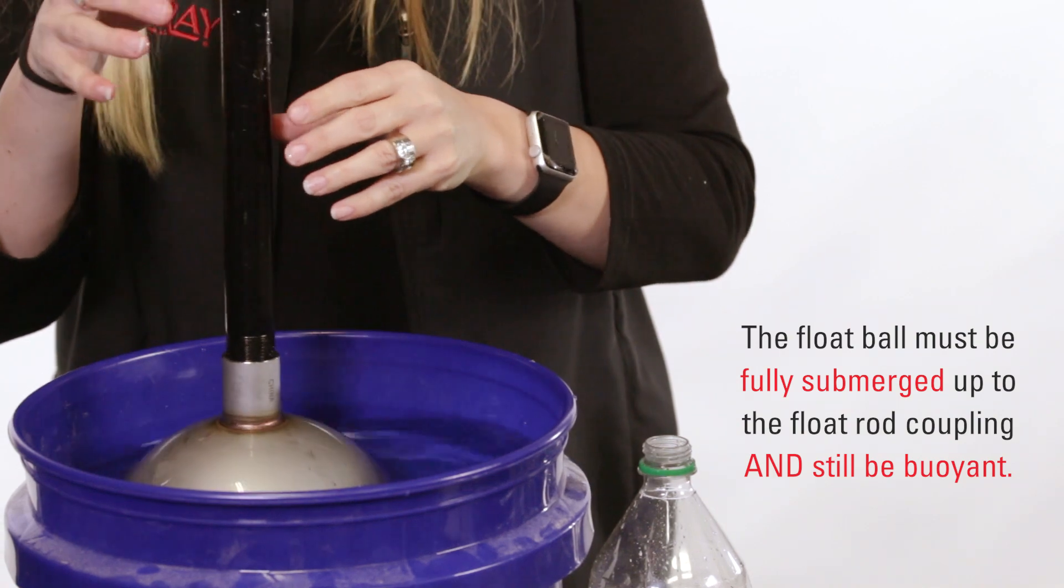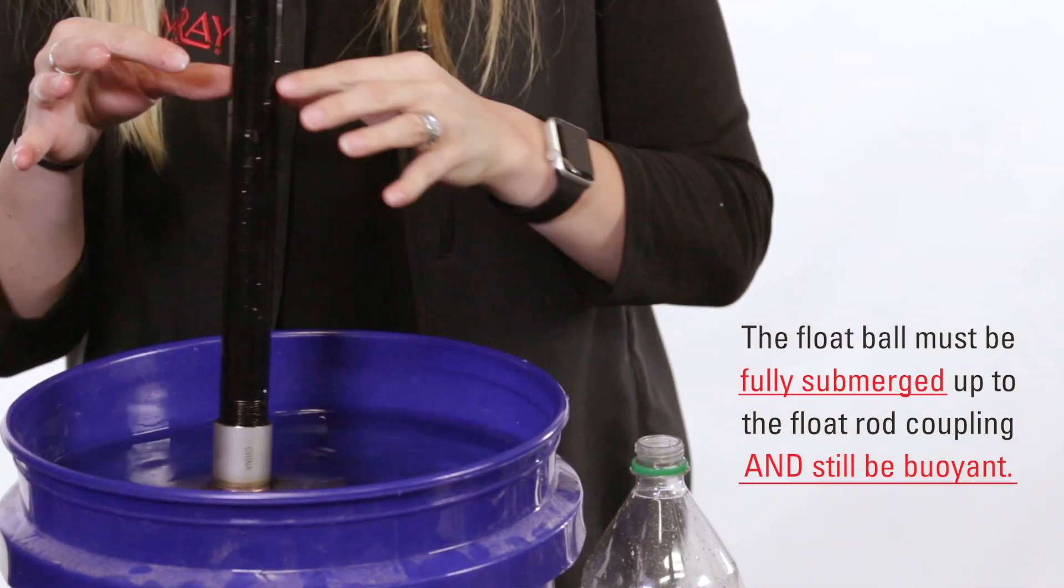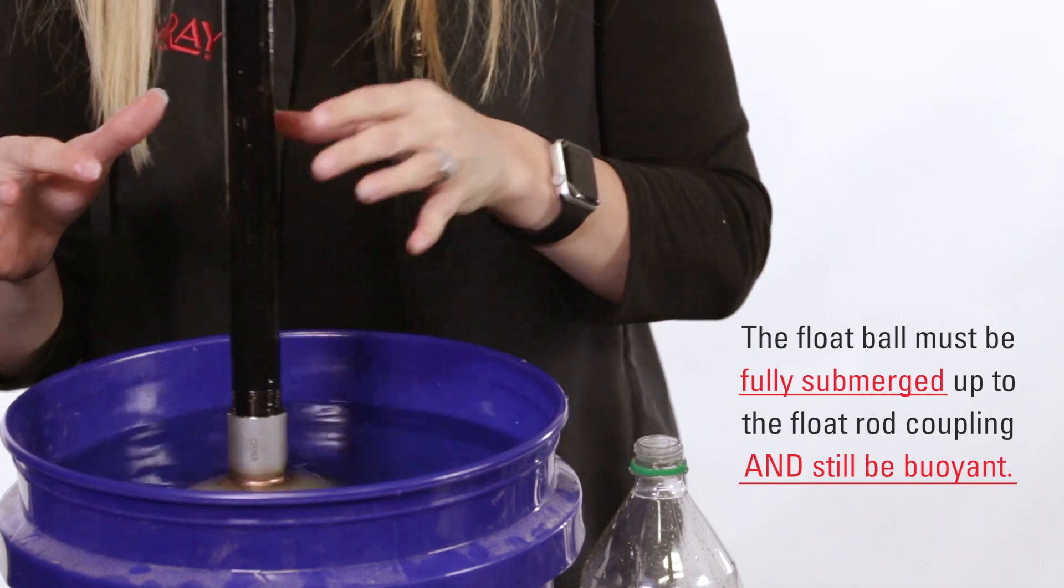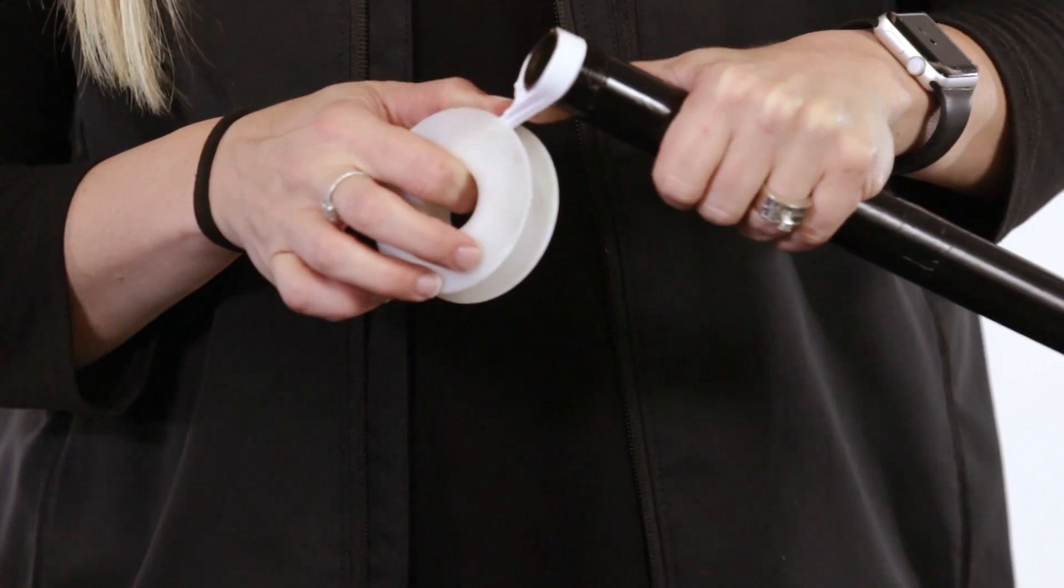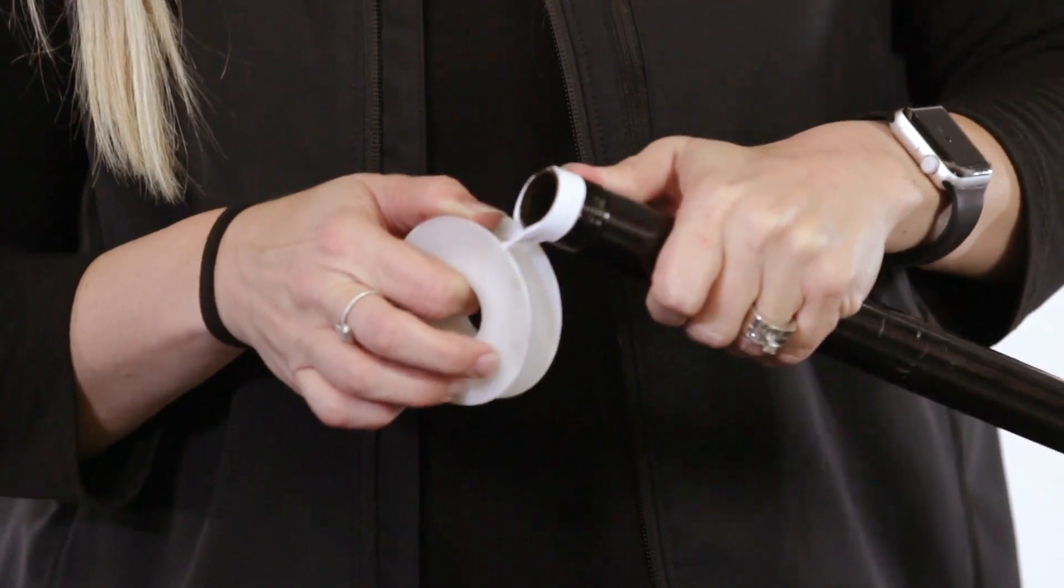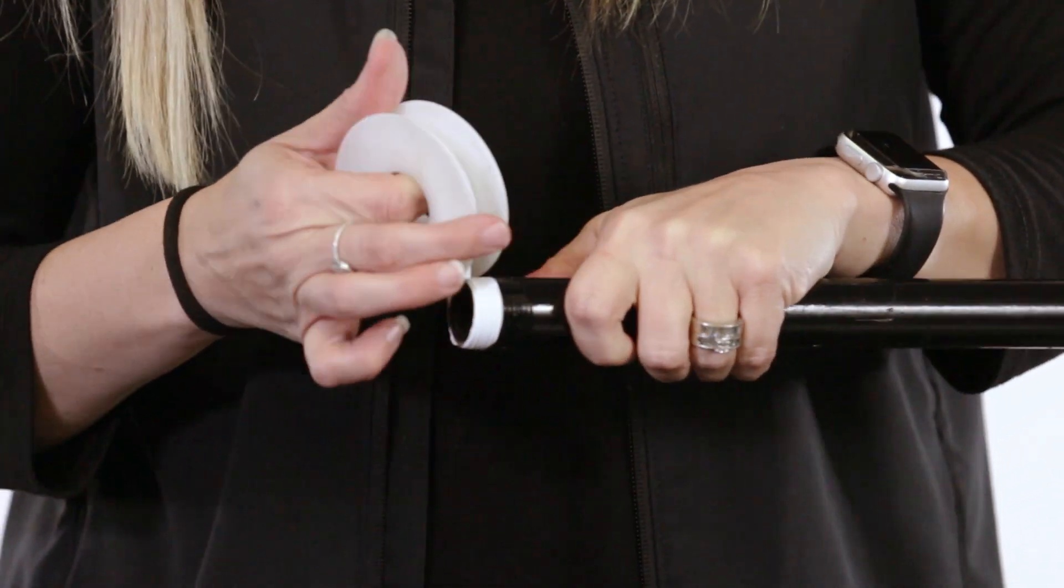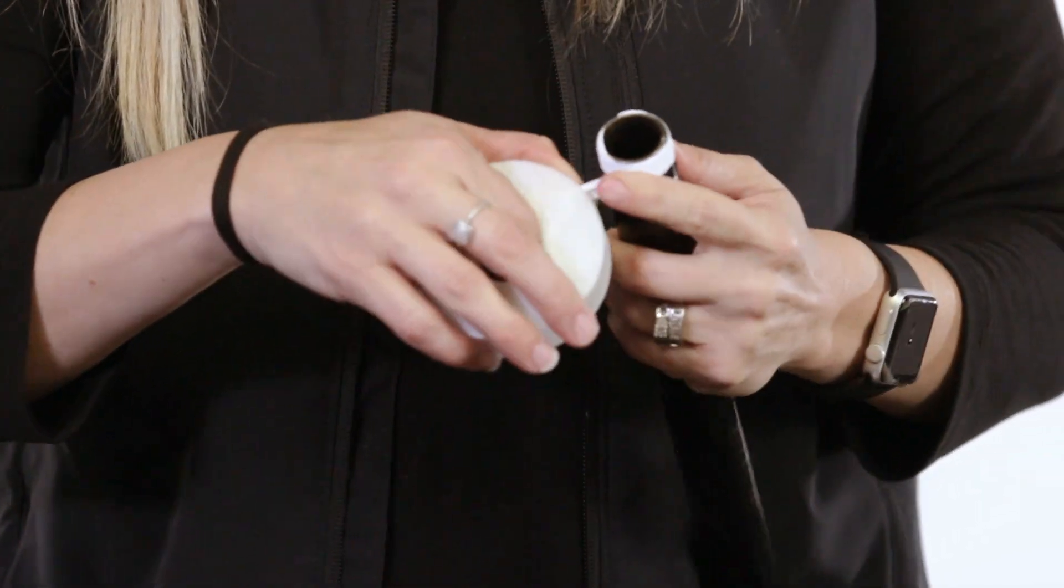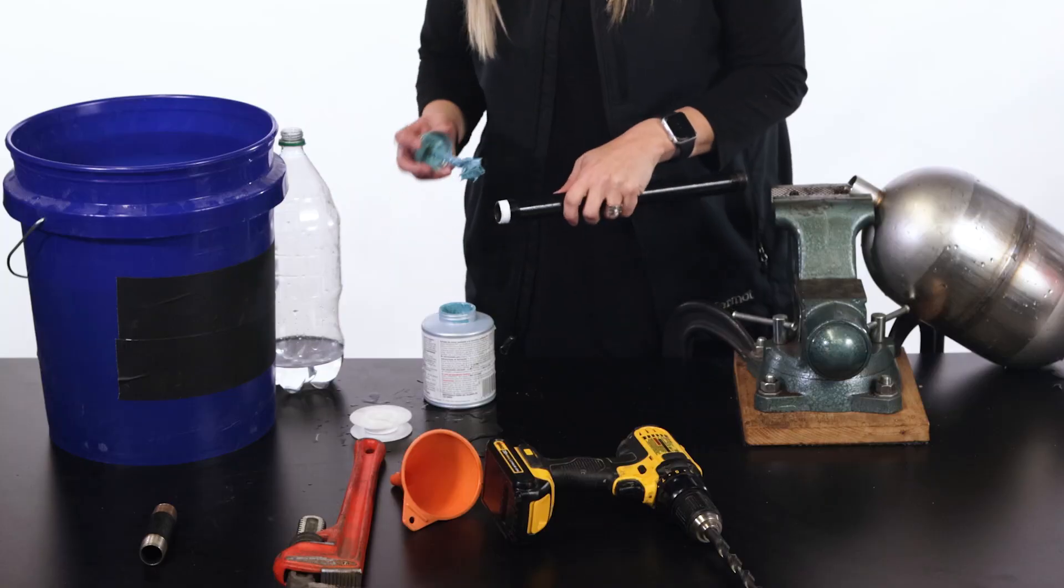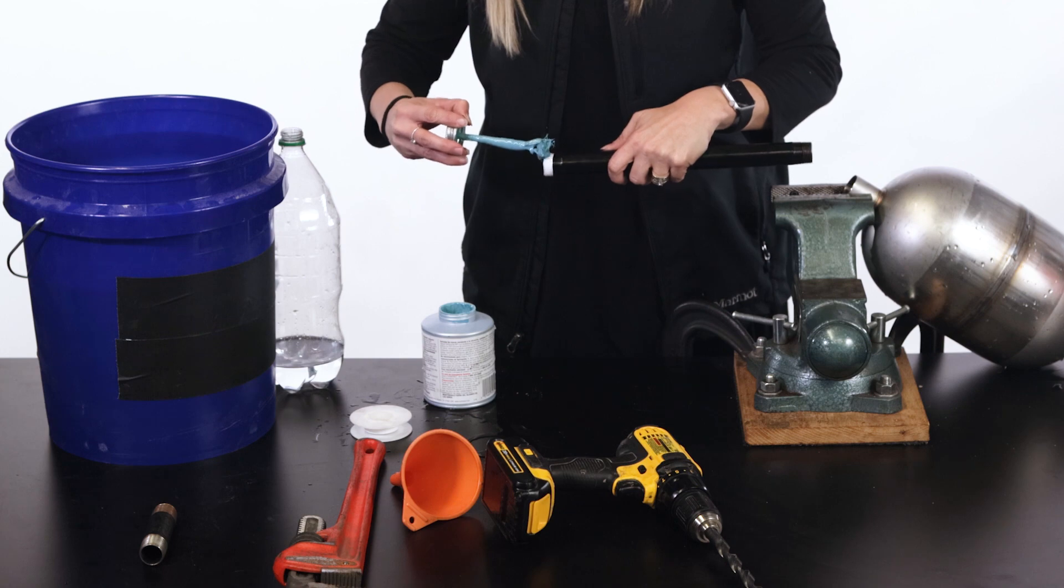If the float ball is fully submerged up to the float rod coupling and is still buoyant, you are now ready to seal the threads. Do this very carefully to achieve a good seal. We recommend also using pipe sealant. When the float is under pressure, water can easily be forced in.